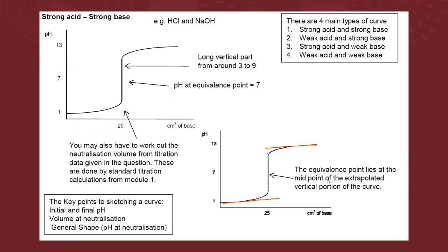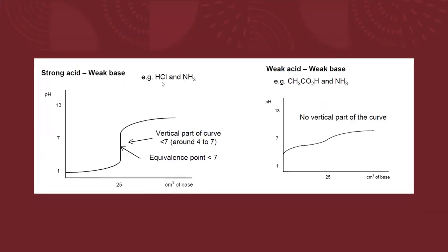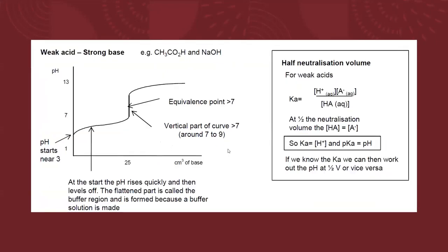These are the titration curves. For strong acid and strong base, the vertical portion is from pH 3 to 9. For weak acid and strong base, the vertical portion is from 7 to 9. For strong acid and weak base, the vertical portion is from 4 to 7. So for strong base and weak acid, the vertical is from 7 to 9.